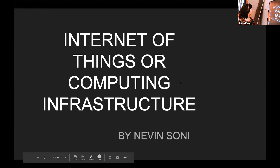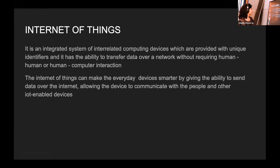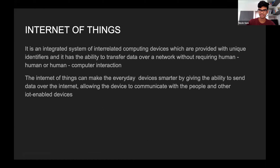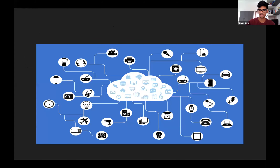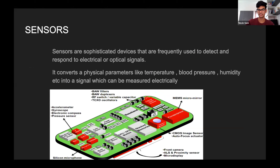Good afternoon everyone. I'm going to present Internet of Things, or IoT. It's an integrated system of computing devices provided with unique identifiers that has the ability to transfer data over a network without requiring human-to-human or human-to-computer interaction. IoT devices can communicate with each other to perform specific tasks. It makes everyday devices smarter by enabling them to send data over the Internet and communicate with people and other IoT-enabled devices. These work with the help of sensors — some check temperature, some blood pressure, some humidity — depending on the use case.